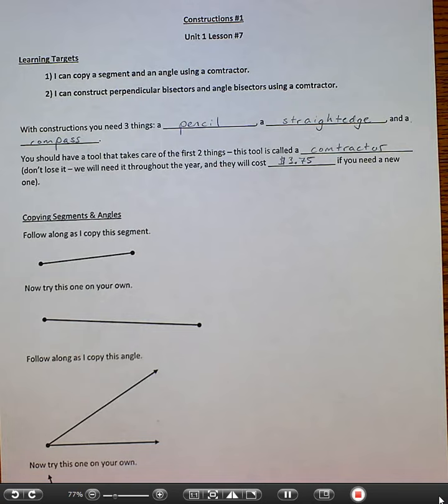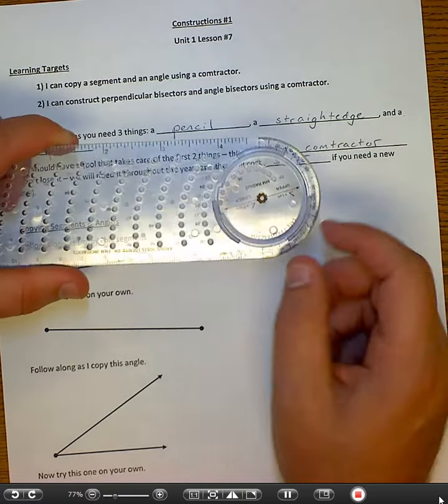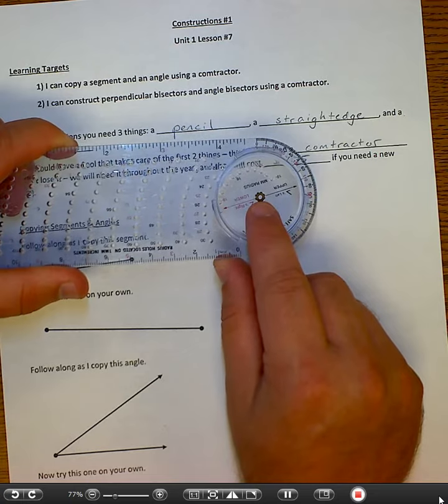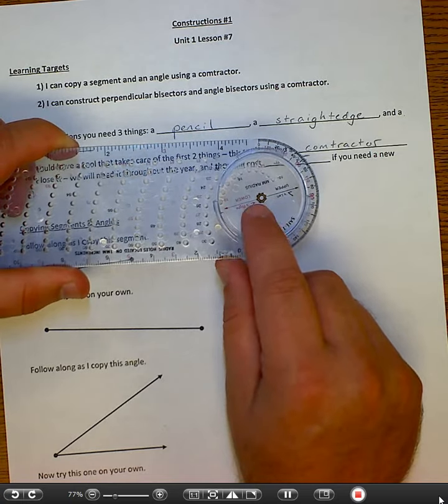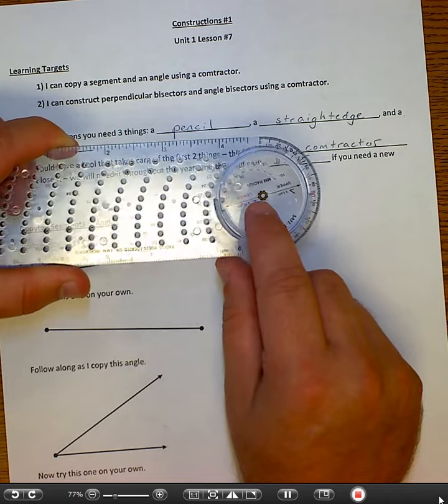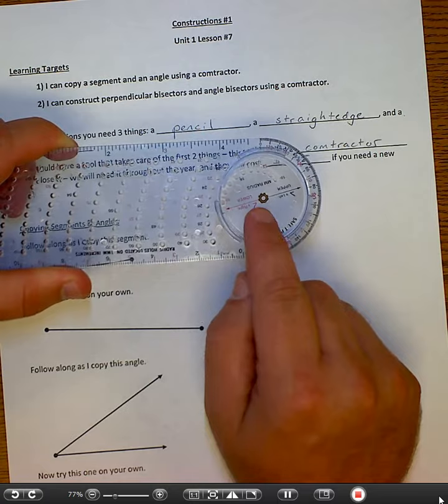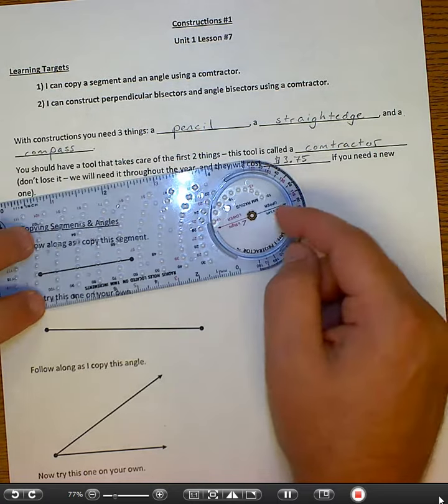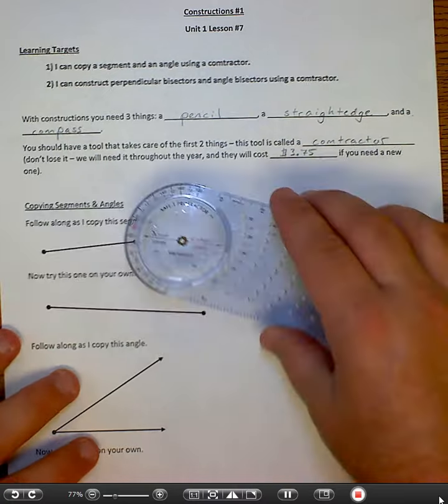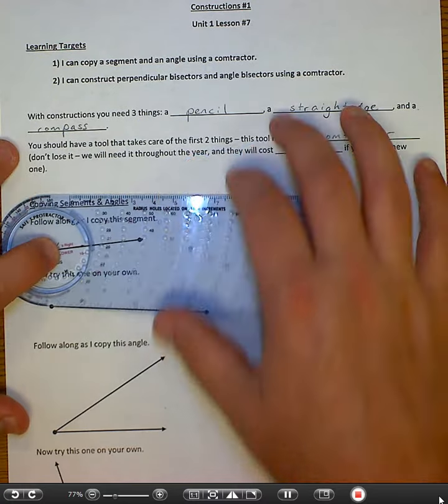So follow along as I copy this segment. Before I get started really, I'm going to point out a couple things about the comtractor. I'm going to call this the circle thingy. Really accurate. Yeah, you could probably look it up in the dictionary. This is me being sarcastic. But I'm going to call that my circle thingy. That's where you're going to either hold and move this, or you're going to put it on something, and you're going to hold it there, and now this thing moves.